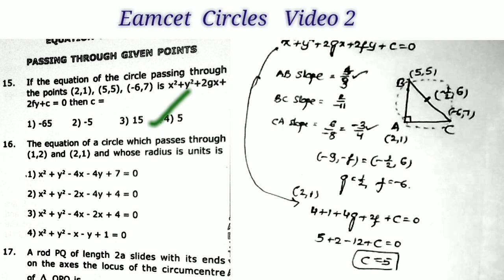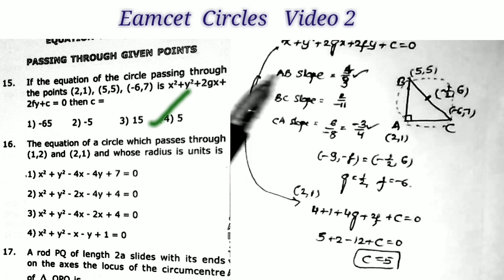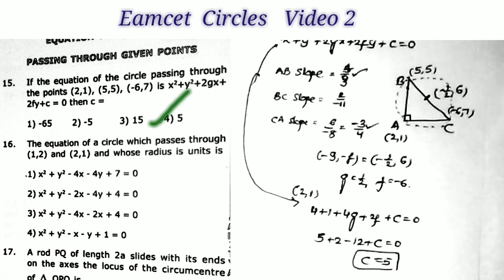The key approach is to first check whether the given points form a right angle triangle. If they do, finding the center is straightforward — it is the midpoint of the hypotenuse.